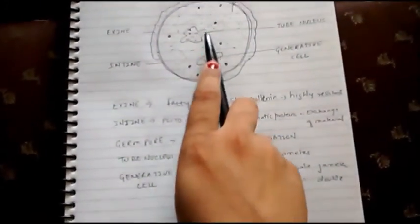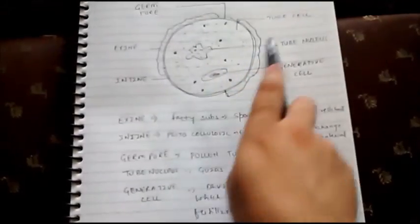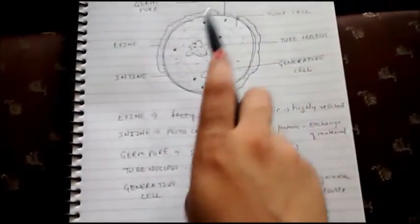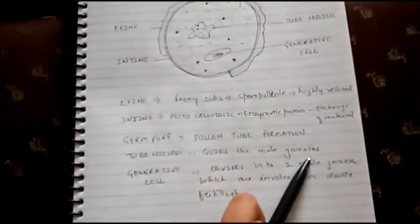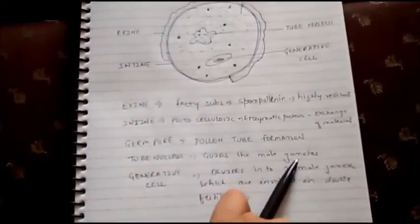After that there is tube nucleus which is inside the tube cell. Tube nucleus guides the male gametes once the pollen tube has been formed.